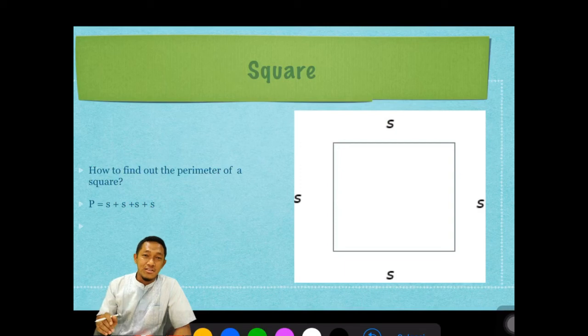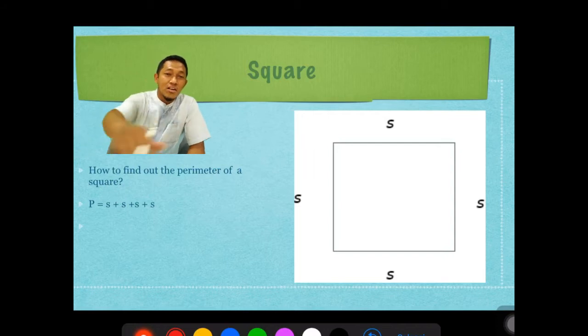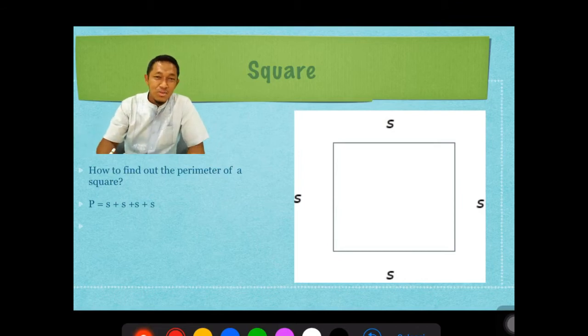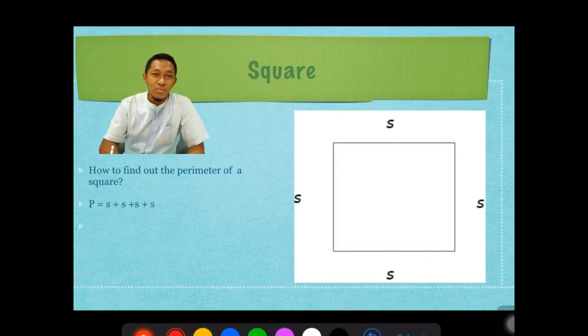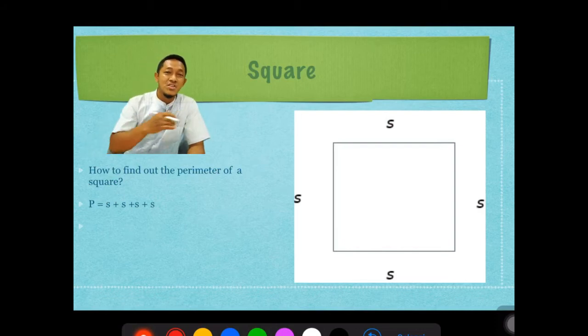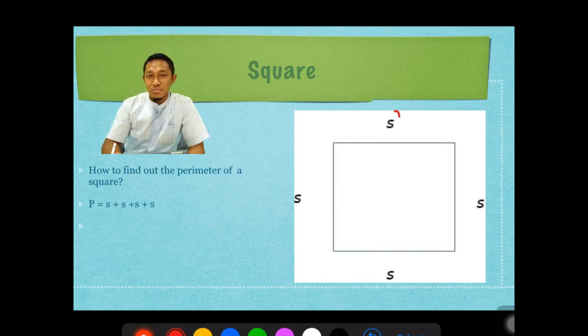Itu artinya kamu sudah mengelilingi, ya. So if you want to find out the perimeter of 2D shapes, you can measure. You can walk around lewat tepi-tepinya, lewat pinggir-pinggirnya. Tidak boleh lewat tengahnya. You can bring meter roll maybe, pakai meteran roll besar. We can find out the perimeter of the basketball yard, the football yard, and sebagainya, or our room, our classroom.